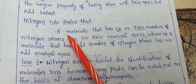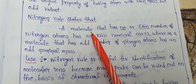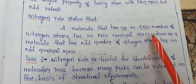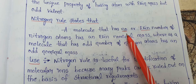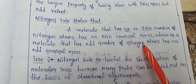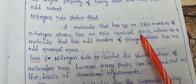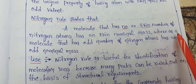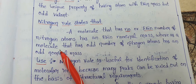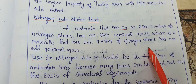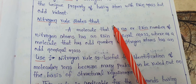To apply the rule, check any molecule and count the number of nitrogen atoms. If the molecule has an even number of nitrogen atoms, or nitrogen atoms are absent, the mass will be even. If the molecule has an odd number of nitrogen atoms, then we will observe an odd mass. That is the nitrogen rule.